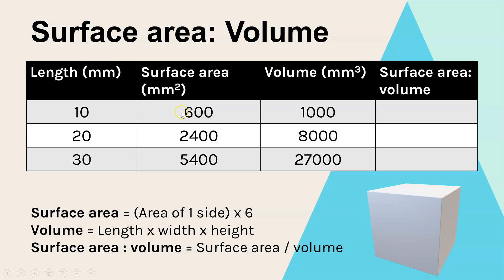We then multiply by six because a cube has six sides, so for the first cube that's 10 times 10 times 6. For the volume, being three dimensions, that's length times width times height — so for the first cube 10 times 10 times 10, which gives us 1000. Finally, the surface area to volume ratio is calculated by dividing the surface area by the volume. So that's what we see in the final column: 600 divided by 1000 is 0.6, along with the two other surface area to volume ratios.